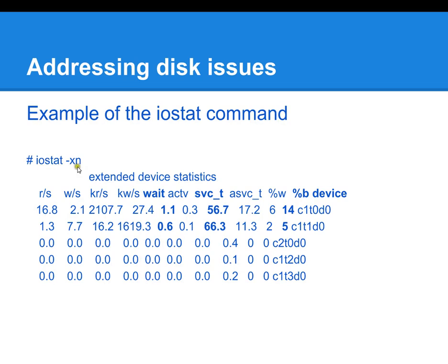Here's an example of output from iostat -xn. You can see the wait time column, the service time column, and the percentage of time the disk is busy, as well as the disk that these stats are coming from. You have to be mindful of the applications or services actually using the disk. If it's read-specific, you'd want a mirrored configuration. You could also consider moving workloads to other disks. For write-specific applications, there's a RAID configuration called striping that allows fast read performance.